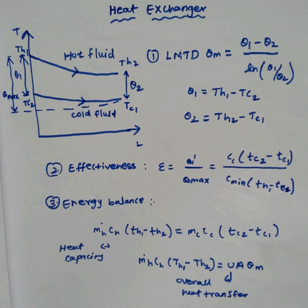Effectiveness: Heat Exchanger effectiveness is defined as the ratio of actual heat transfer rate to maximum possible heat transfer. Effectiveness equals actual heat transfer divided by maximum possible heat transfer.